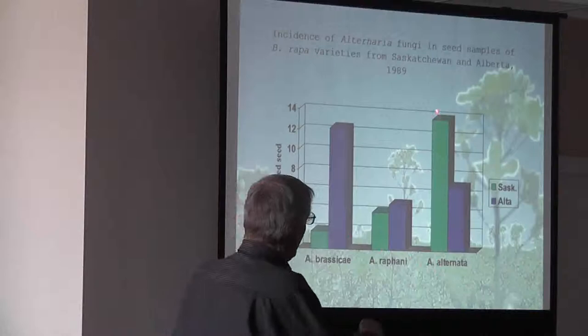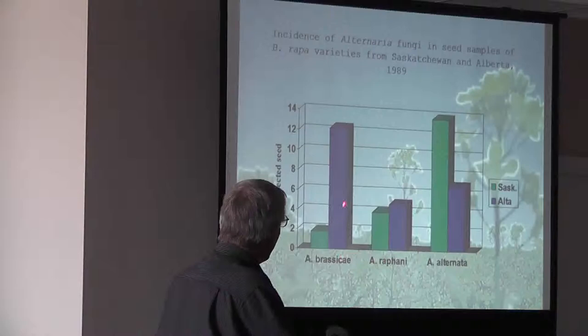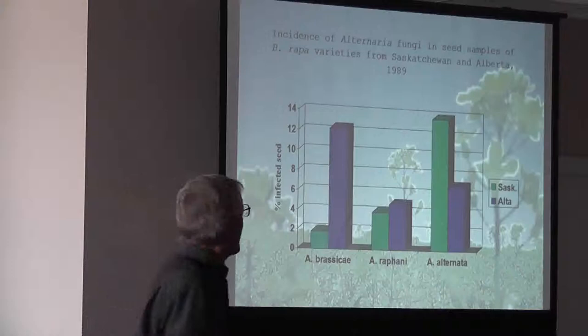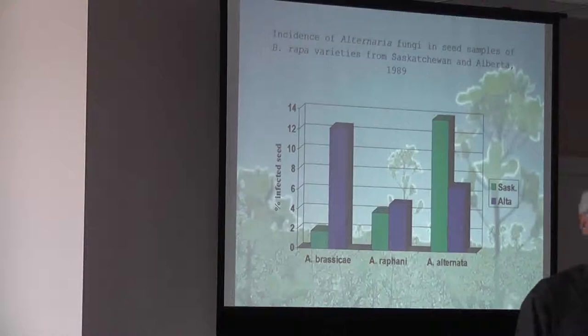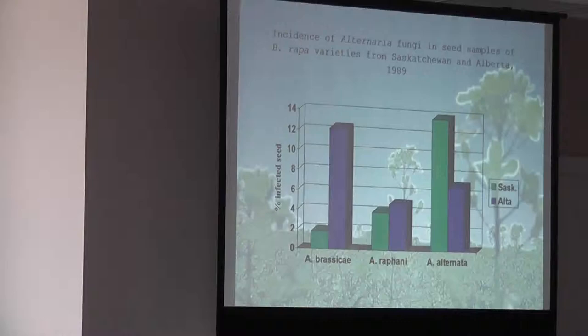That's just an example of some of the seed lots that we had tested on how much alternaria we have. This is Saskatchewan. They've got a different type of alternaria than we do in Alberta. We've got Alternaria brassicicola, and it can cause us a lot of grief. I didn't see a lot of alternaria up here in the fall. I was up walking fields through the Polair area in the end of August. A lot of it was swathed and it was pretty clean from that standpoint.